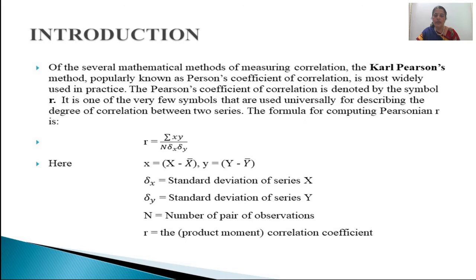Carl Pearson's Coefficient of Correlation is the most famous statistical tool for calculating correlation. Just in the previous session, we learned that correlation is the tool which helps us in knowing the relation between variables — maybe only two variables, or maybe more than two variables. To measure the degree of relationship or the direction of the relationship, we use Carl Pearson's Coefficient of Correlation, denoted by the symbol small r.